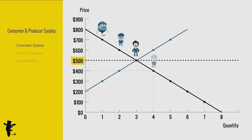What about a guy who's willing to pay $400? The computer costs $500. No transaction will take place. Add up all these surpluses. This is the total consumer surplus in the market.